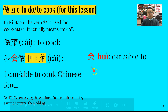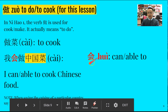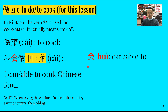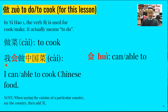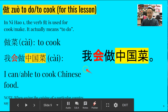When we say we are able to or can do something, remember we learnt 会 — we learnt 会 before when we said 'I can speak Chinese': 我会说中文. Again here in this sentence: 我会做中国菜 — I can make Chinese food. Because cooking is learnt through a learning process, we use 会 for 'can' or 'able to'. 我会做中国菜.